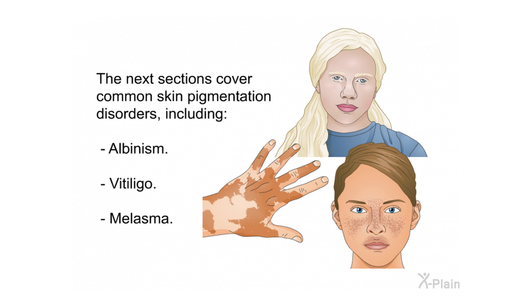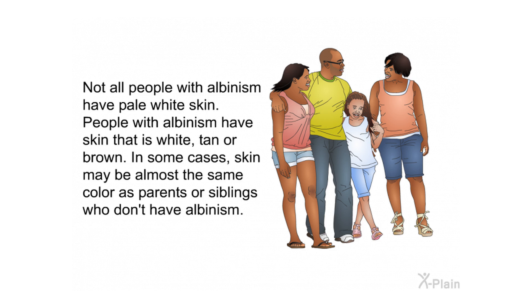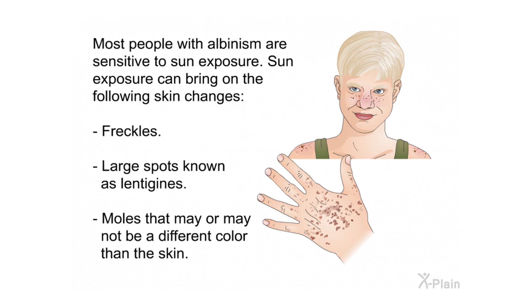The next sections cover common skin pigmentation disorders including albinism, vitiligo, and melasma. Albinism is an inherited disorder affecting all of a person's skin. People with albinism inherit one or more abnormal genes which limit melanin production. The skin makes little or no melanin. Not all people with albinism have pale white skin — their skin may be white, tan, or brown, and in some cases may be almost the same color as parents or siblings who don't have albinism.